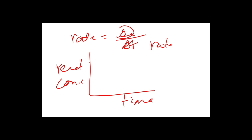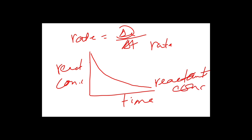Reactant concentration decreases with time, while product concentration increases. For example, in the reaction A + B → AB, the reactant concentrations of A and B decrease while the product concentration of AB increases over time.